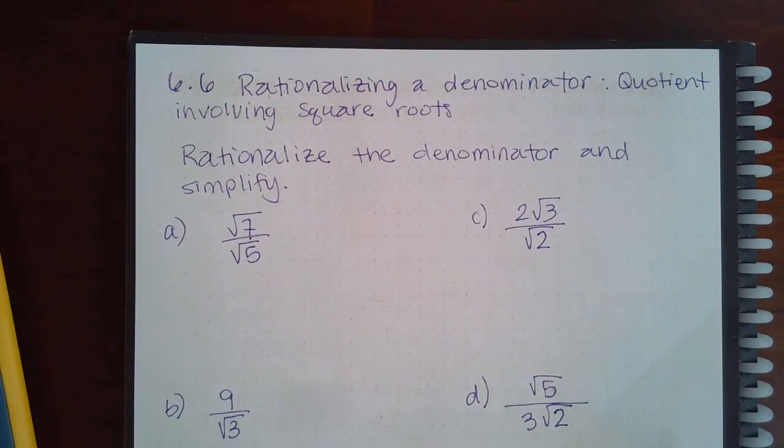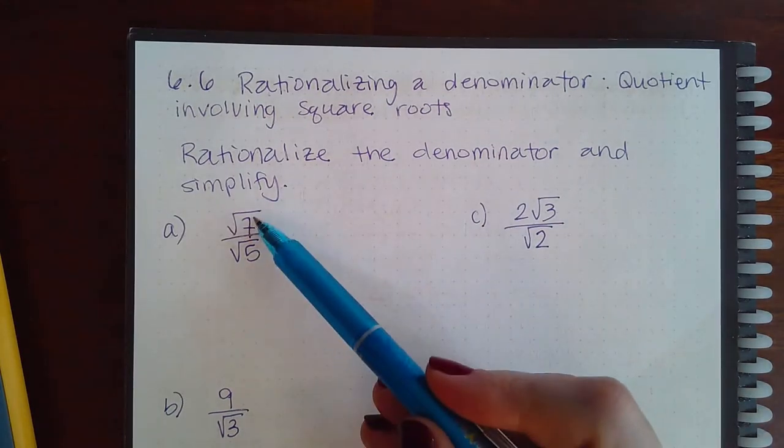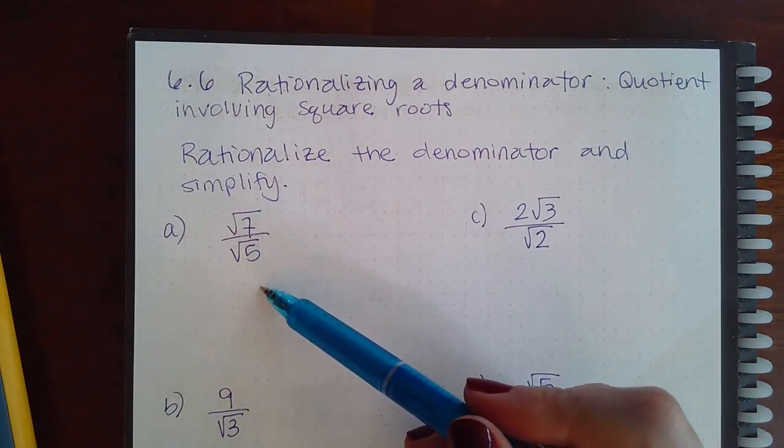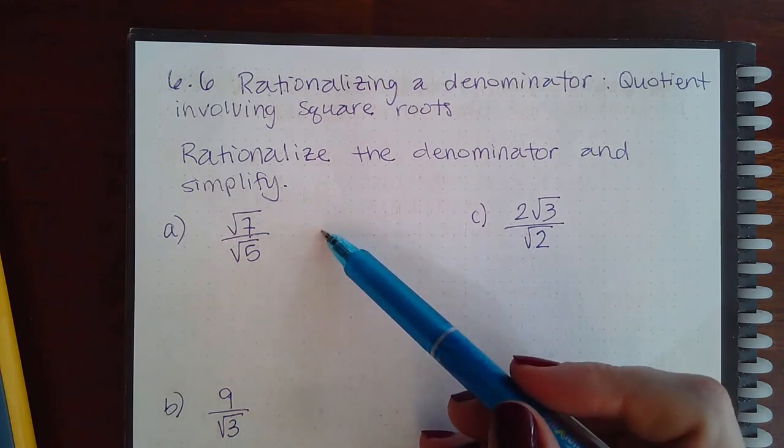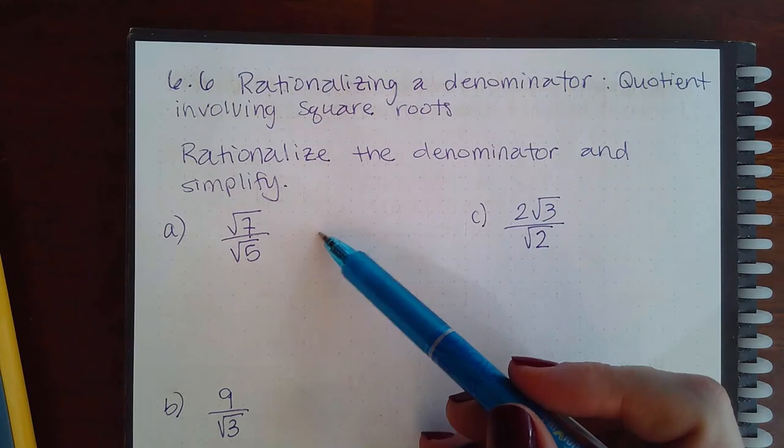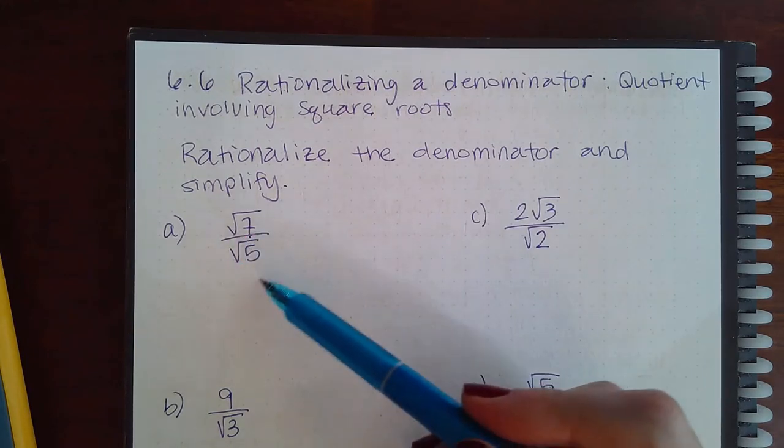Here we have 6.6 rationalizing a denominator. So now we're going to start rationalizing and we have a quotient involving square roots. First you would try to simplify these, but square root of 7 and square root of 5 will not simplify. So then the next thing you want to do is rationalize. Rationalize means that you will no longer have a square root in the denominator.